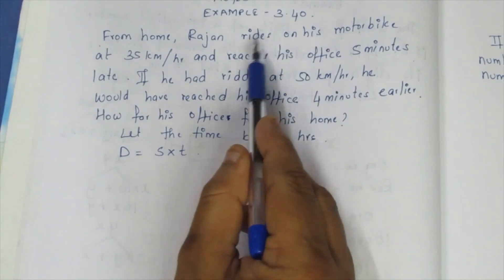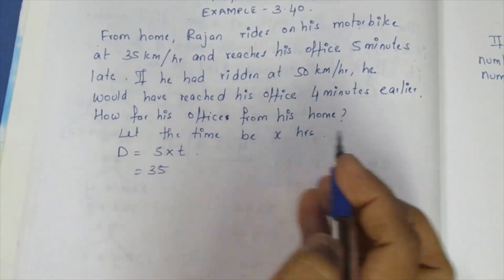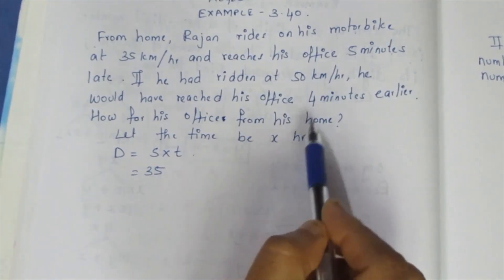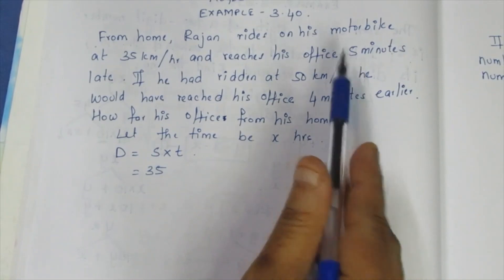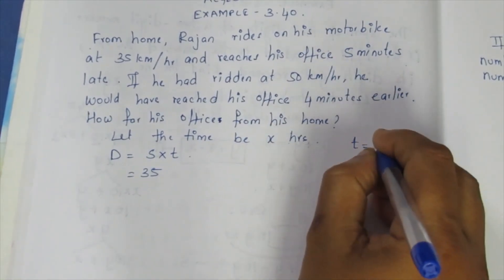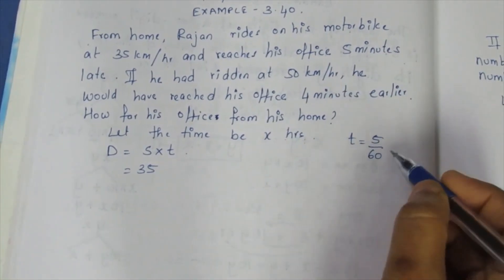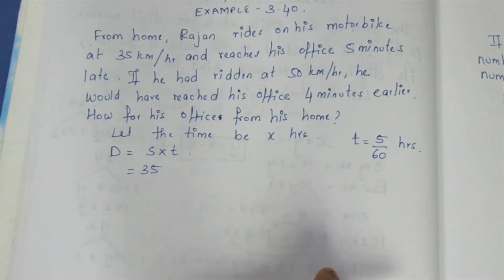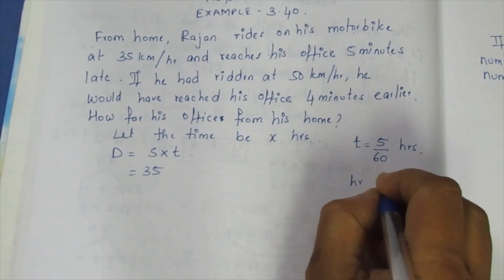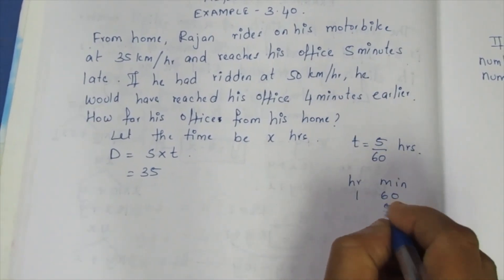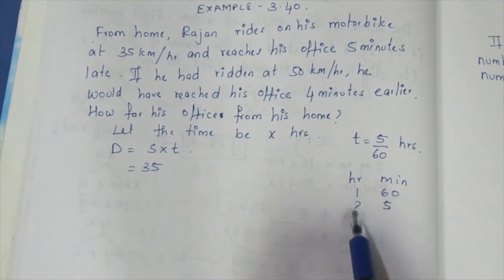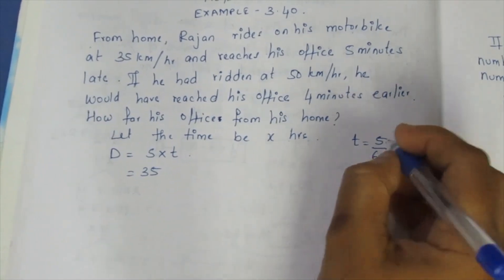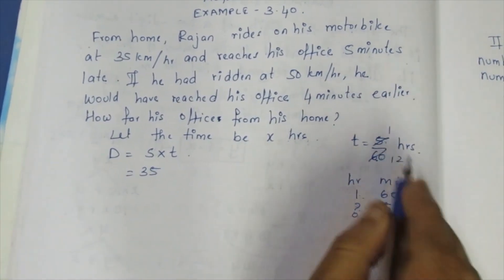The speed is 35 km per hour. The time is 5 minutes extra, so we convert: 1 hour equals 60 minutes, so 5 minutes equals 5 by 60 hours. Cross multiplying gives us 1 by 12. So the time for the first case is x plus 1/12 hours.